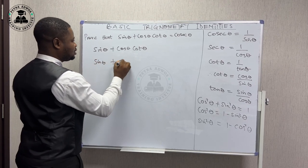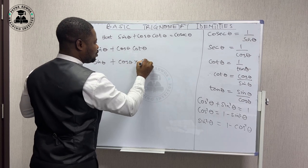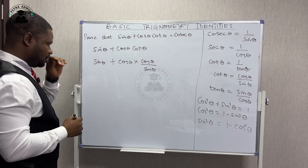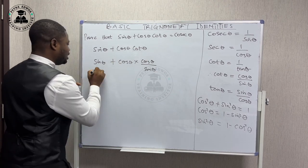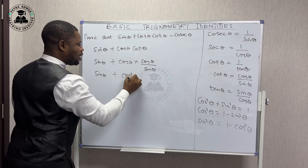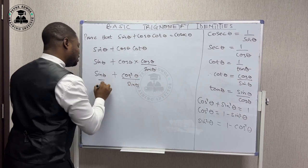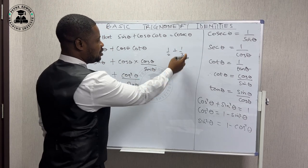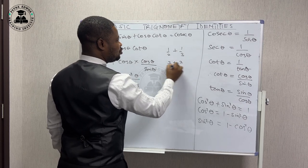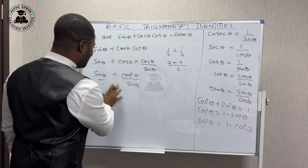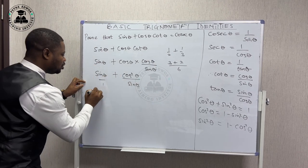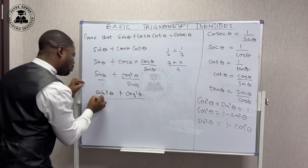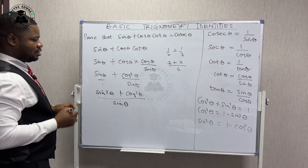So we now have sine theta plus cos theta times (cos theta over sine theta). Multiplying this out gives us sine theta plus cos squared theta, all over sine theta. This is like a normal fraction addition — for example, if you have one over two plus one over two you combine them. Similarly, sine times sine gives sine squared theta, and one times cos squared theta gives cos squared theta, all over sine theta.